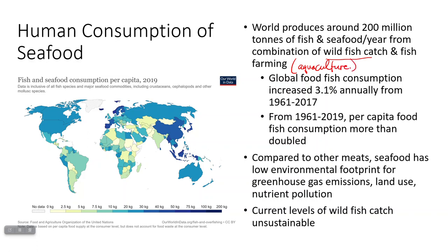Global food consumption has been on the rise, which is probably explainable by the population increase. However, per capita fish consumption has also doubled within that time frame. Per capita means per person — literally 'per head' — so not only do we have more people, each person is eating about double the fish they used to back in around 1961.